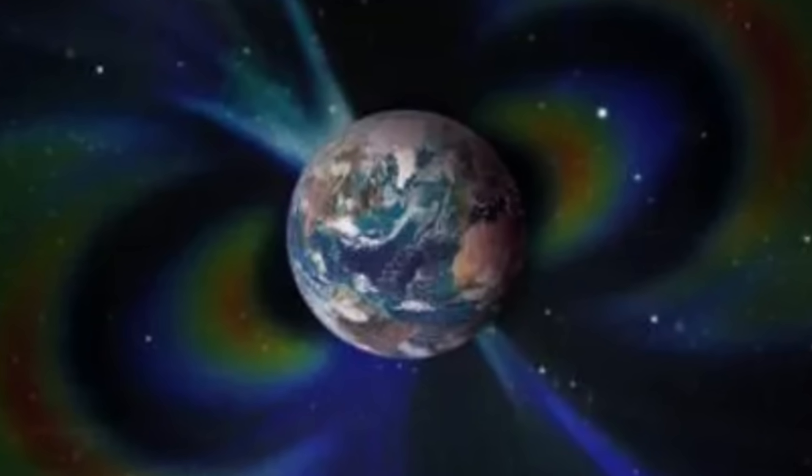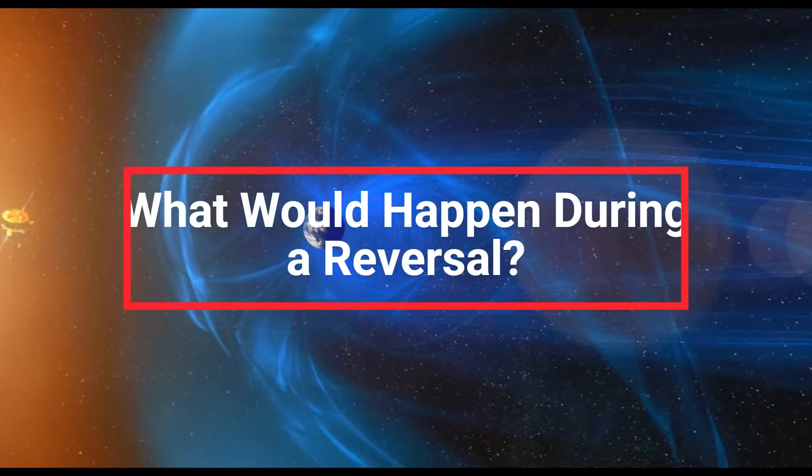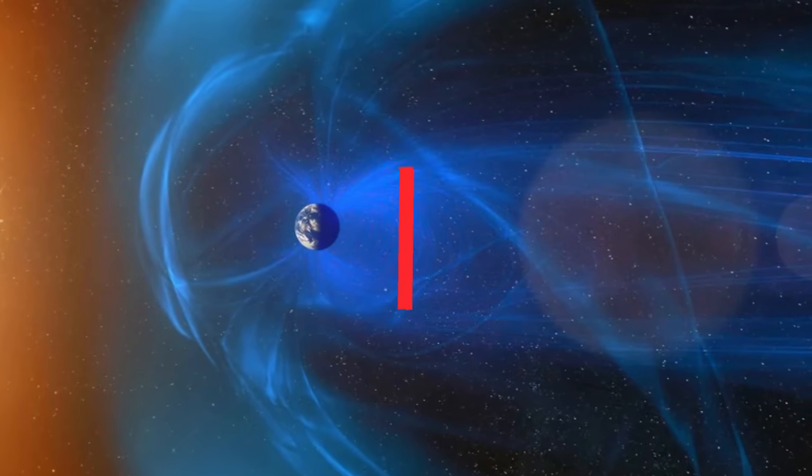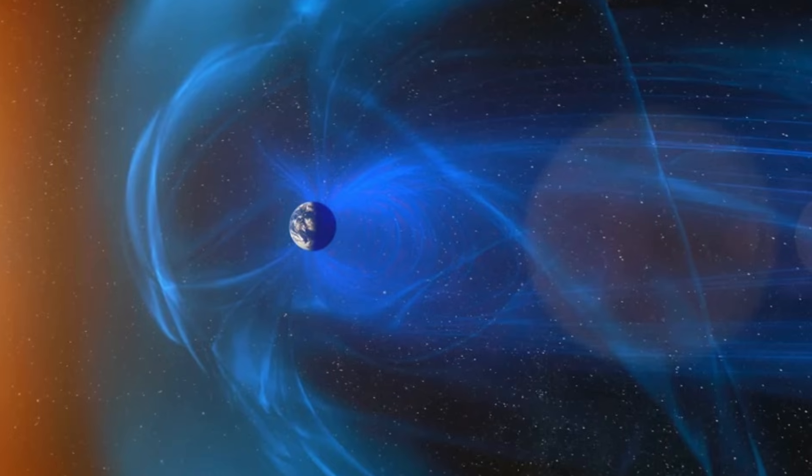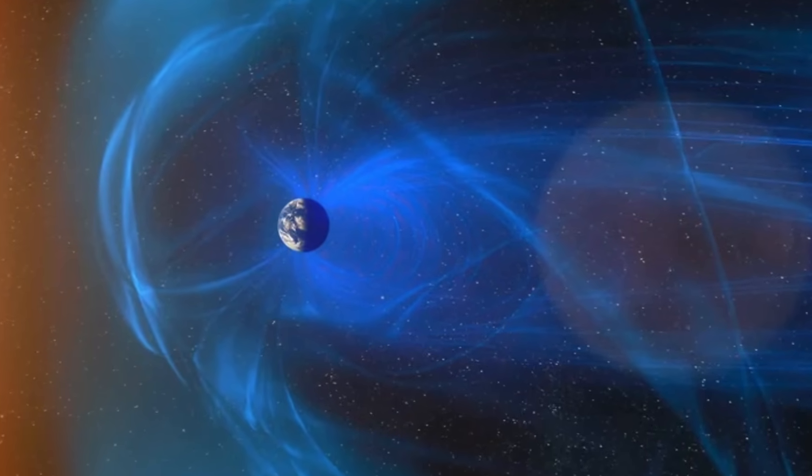This shift could be a sign that a reversal is approaching. What would happen during a reversal? When a magnetic pole reversal occurs, the magnetic field goes through a weakening phase that can last thousands of years. During this period...